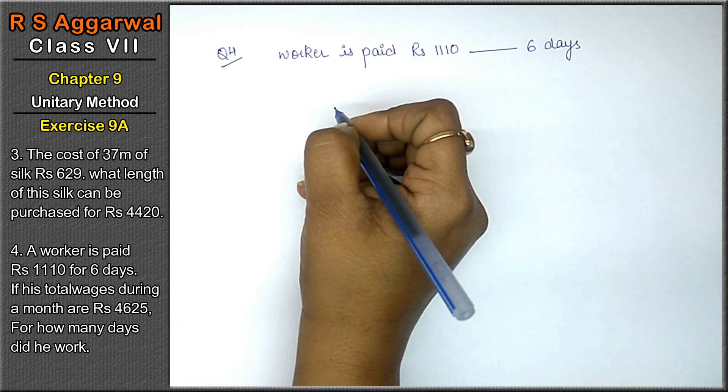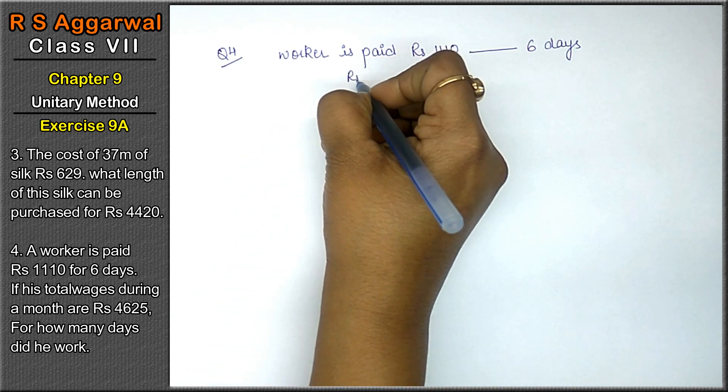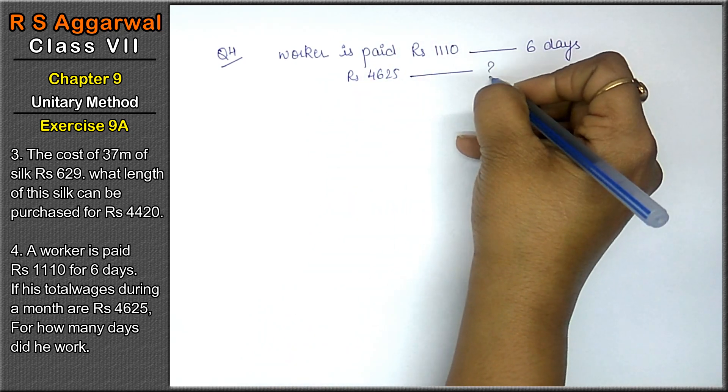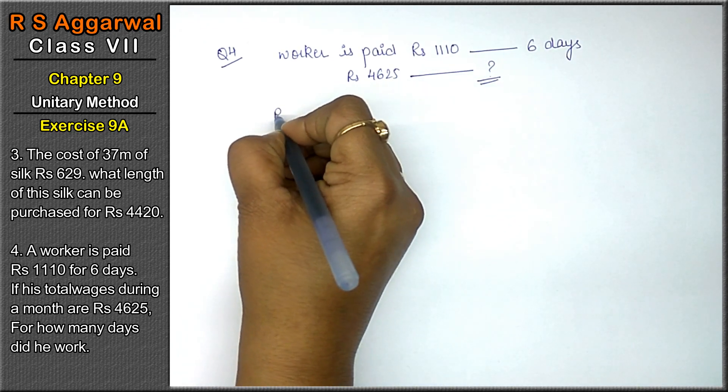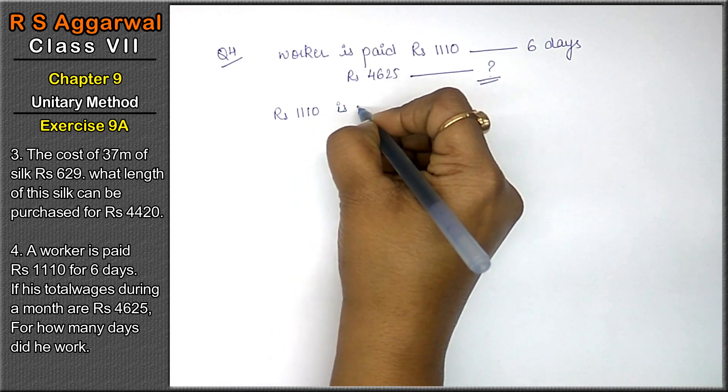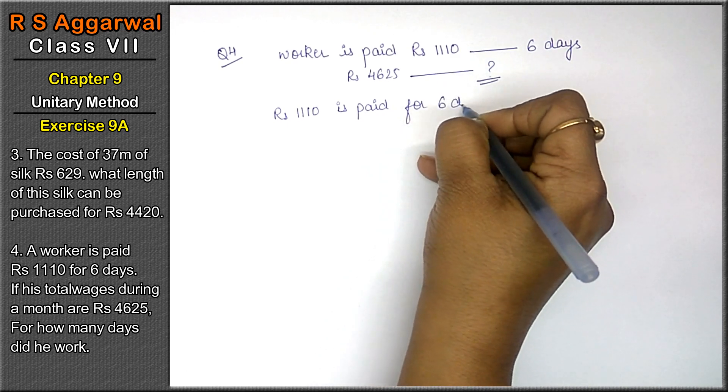Now if its total wages during the year, अगर उसको pay किये जाएं rupees 4625, for how many days did he work? तो हमें उसके number of days निकालना है. Now, rupees 1110 is paid for 6 days. Right friends?